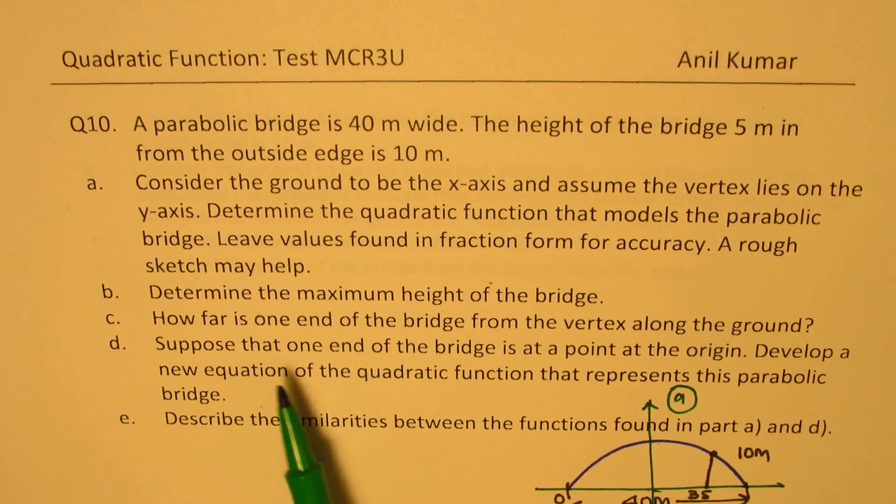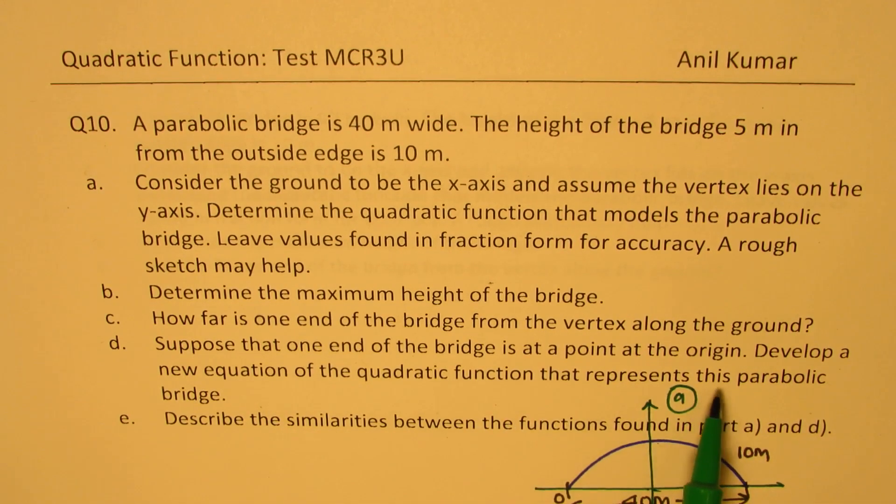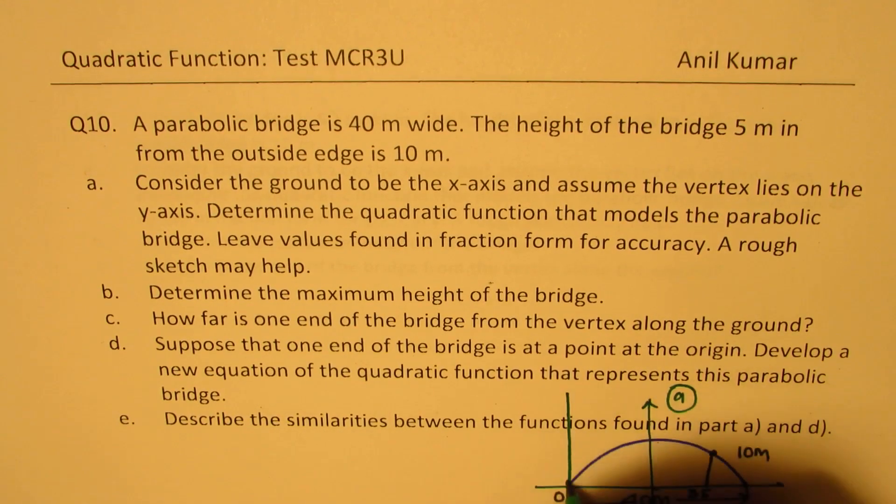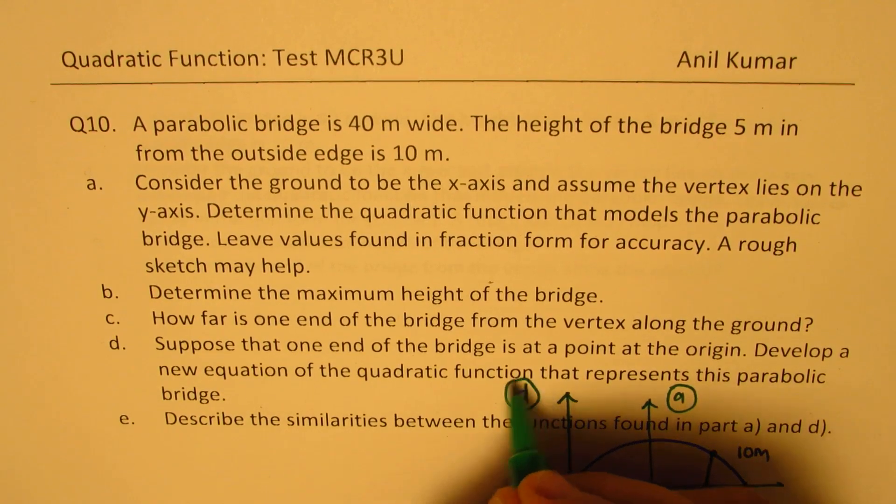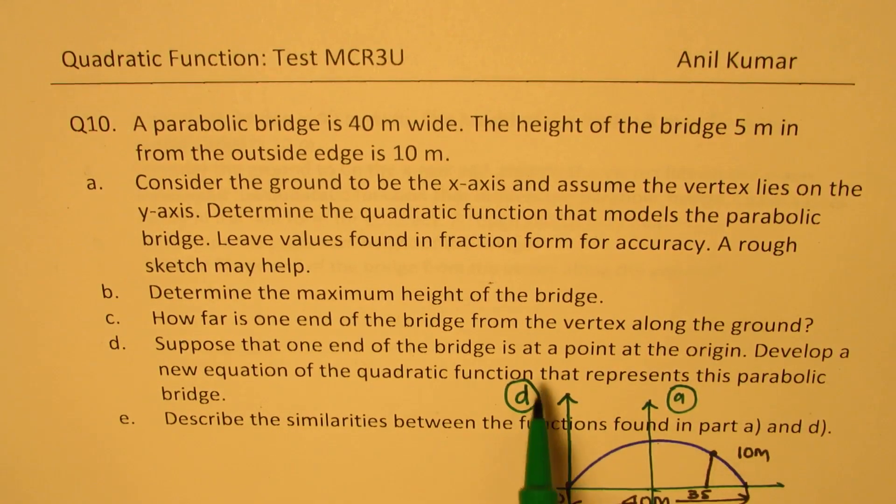C is how far is one end of the bridge? Okay. D is suppose that one end of the bridge is at the point at the origin. This end. Develop a new equation of the quadratic function that represents this parabolic bridge. So another axis could be here.